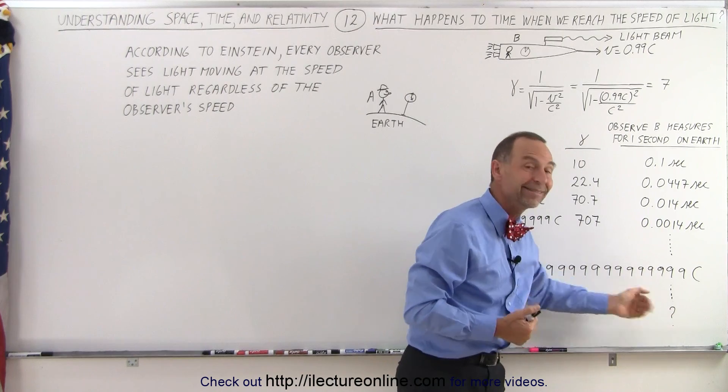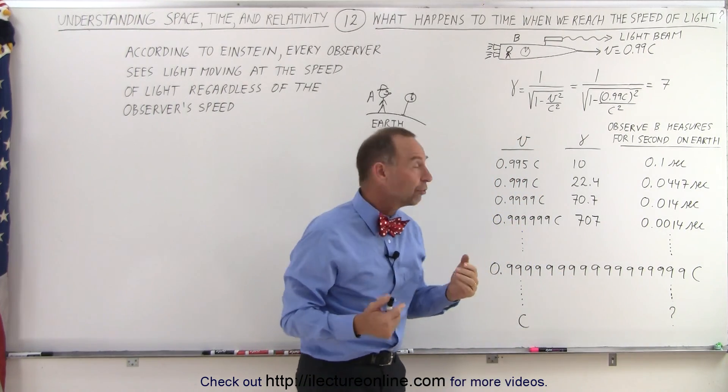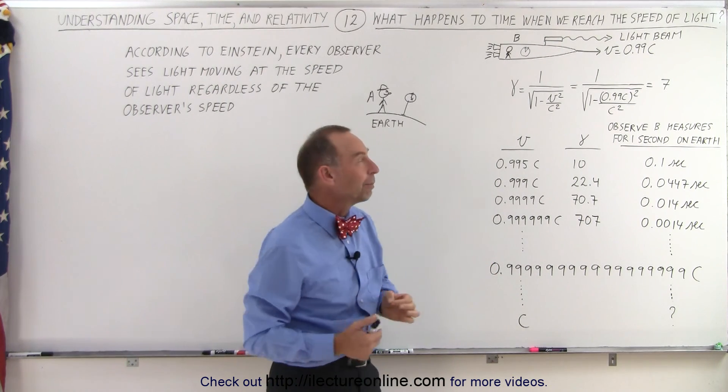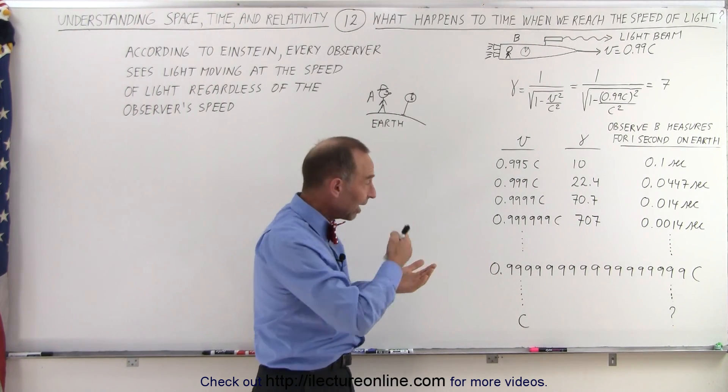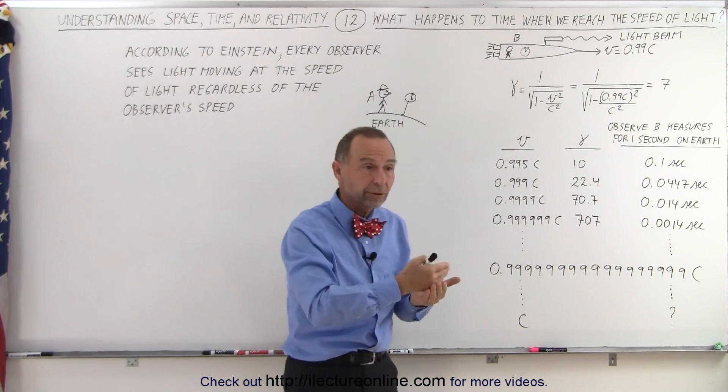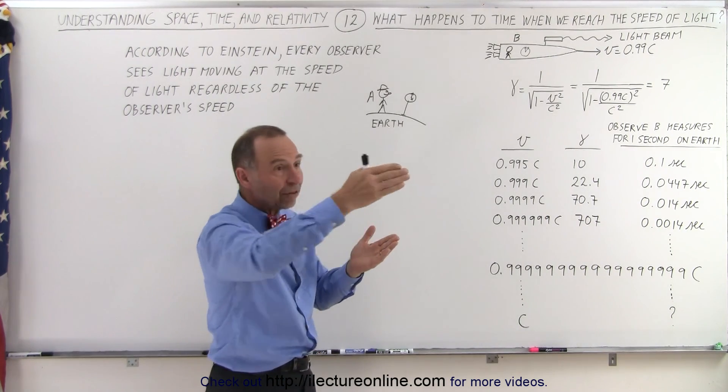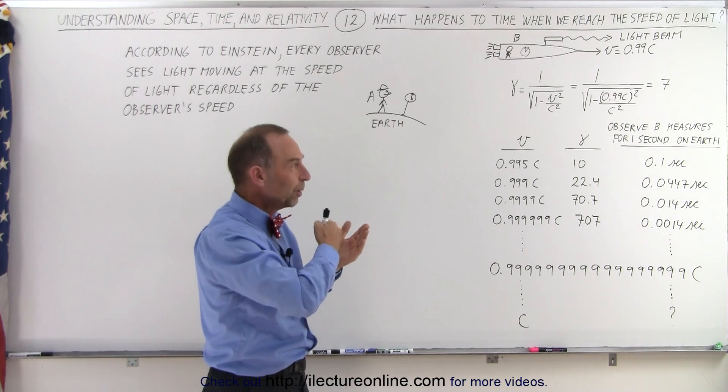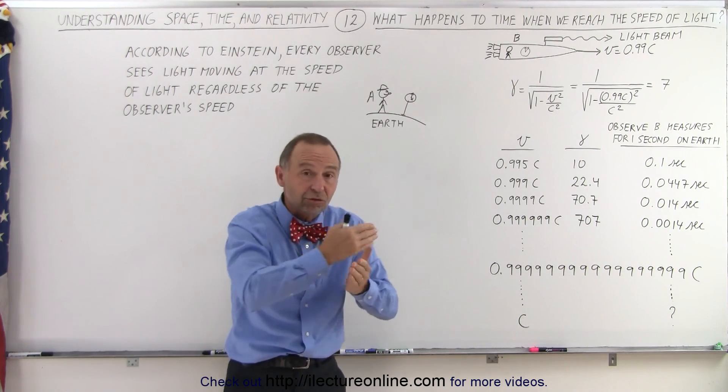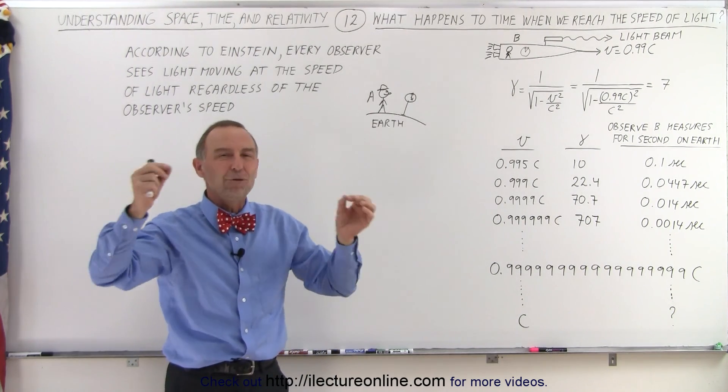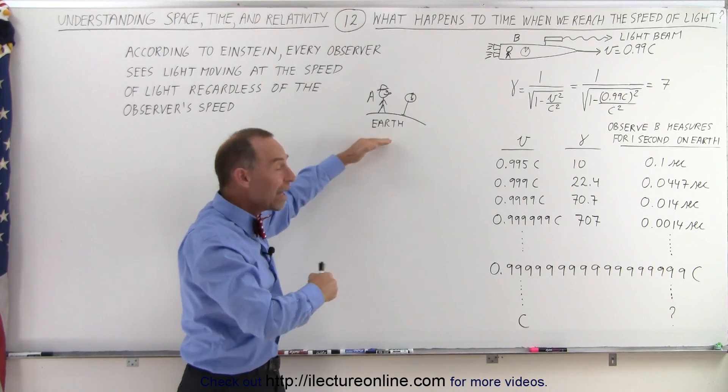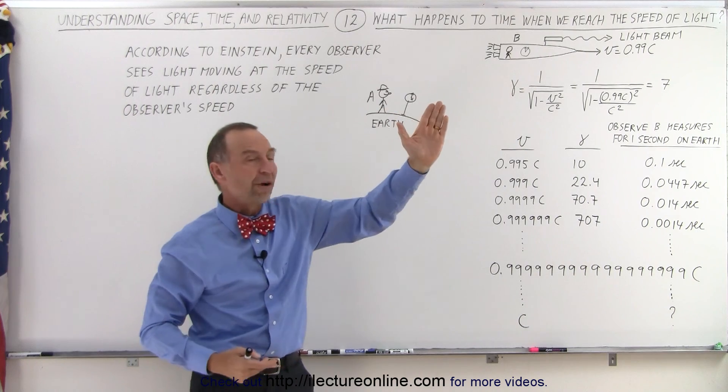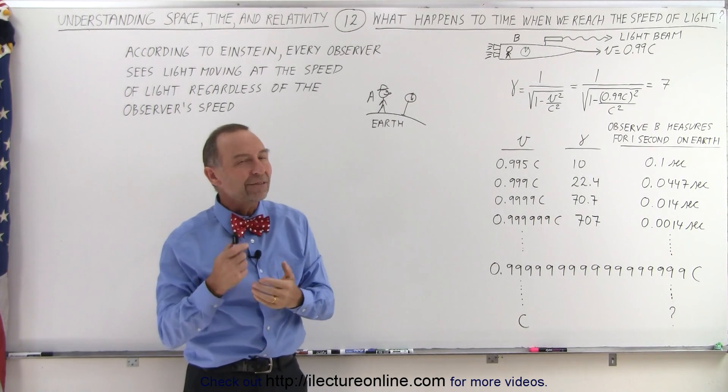Well, then the time would essentially stand still. In other words, for every 1 second passing on the Earth, absolutely 0 seconds would pass on the spaceship. Which means, as time progresses here on the Earth and the spaceship is traveling at the speed of light, the clock on the spaceship would simply stop. And the spaceship could travel and travel and travel, could essentially travel across the entire universe, and no time would pass on the spaceship as billions and billions of years would pass while the spaceship travels across the universe.